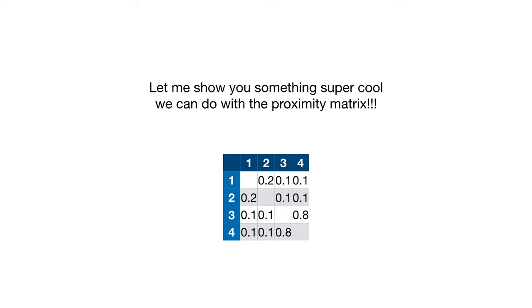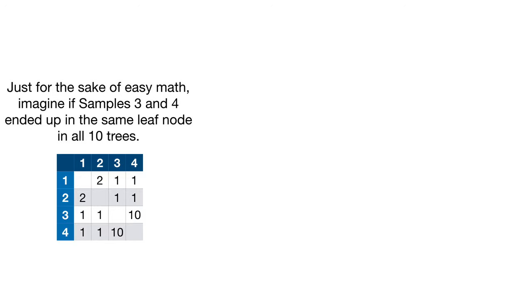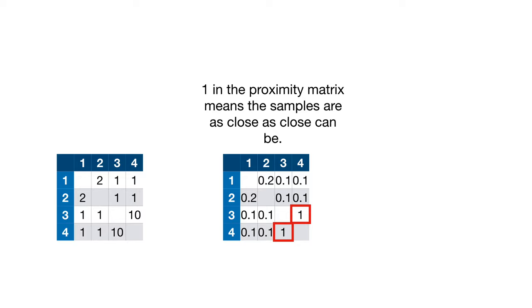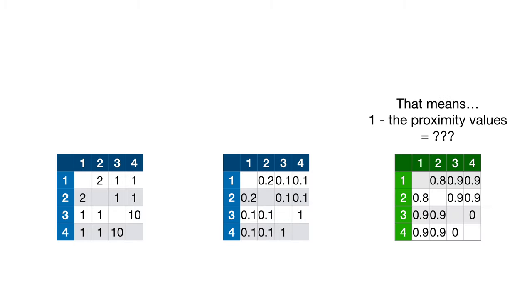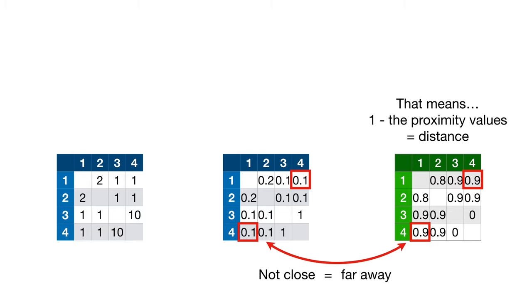Now it's time for an interlude of awesomeness! Let me show you something super cool we can do with the proximity matrix. This is the proximity matrix before we divided each value by 10, the number of trees in the pretend random forest. Just for the sake of easy math, imagine if samples 3 and 4 ended up in the same leaf node in all 10 trees. Now we have a 10 here and here. After dividing by 10, the number of trees in the forest, we see that the largest number in the proximity matrix is 1. 1 in the proximity matrix means the samples are as close as close can be. That means 1 minus the proximity values equals distance.